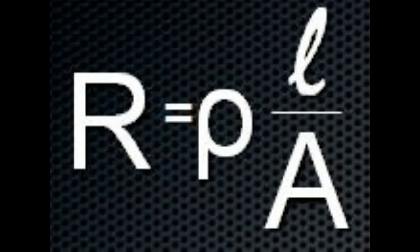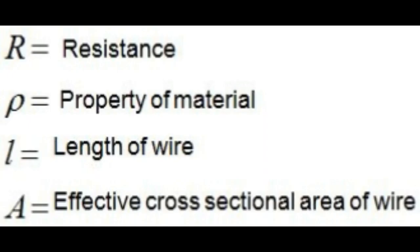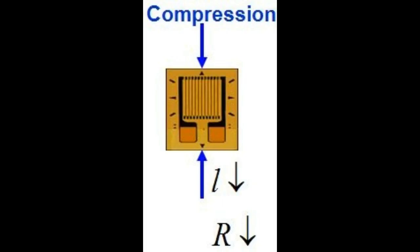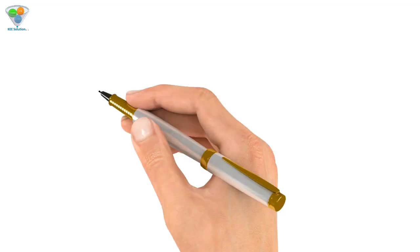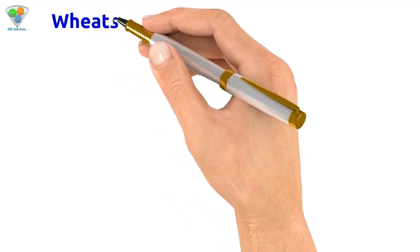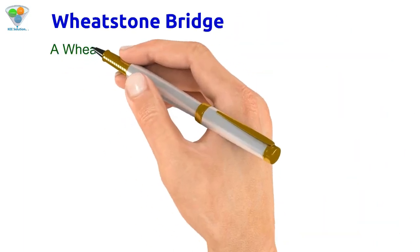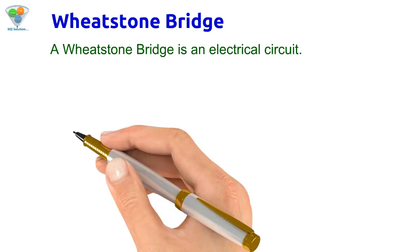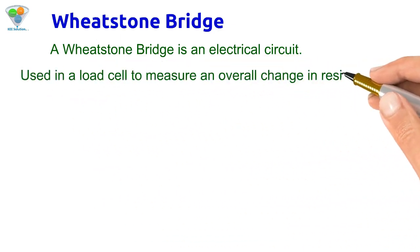When it is tensile, its length and resistance will increase. The total resistance change is commonly measured using a Wheatstone bridge. This is the basic principle of the strain gauge. A Wheatstone bridge is an electrical circuit used in a load cell to measure the overall changes in resistance.